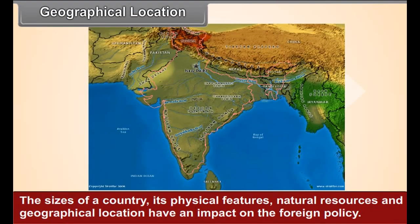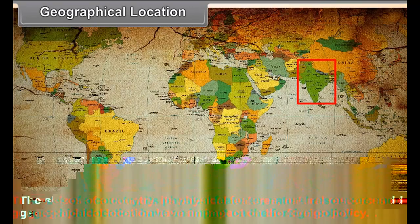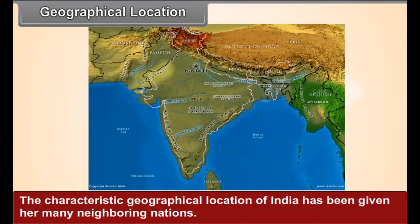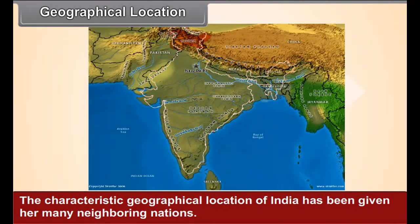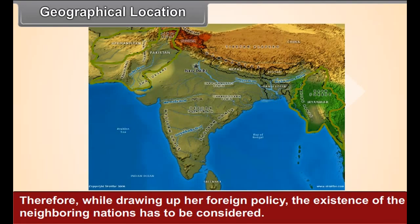Geographical Location: The size of a country, its physical features, natural resources, and geographical location have an impact on the foreign policy. The characteristic geographical location of India has given her many neighboring nations. Therefore, while drawing up her foreign policy, the existence of the neighboring nations has to be considered.